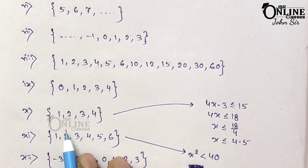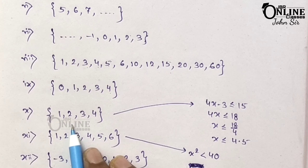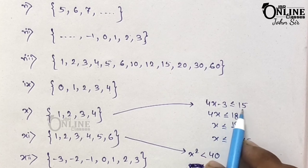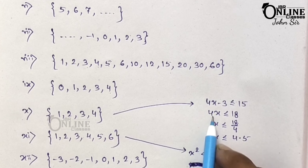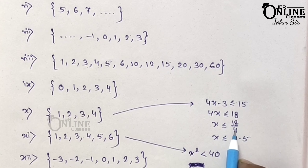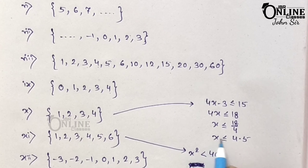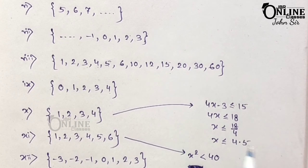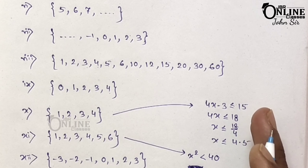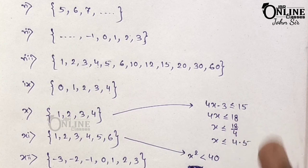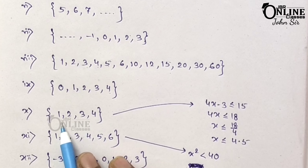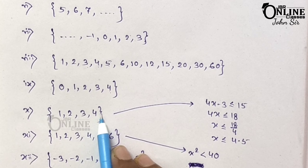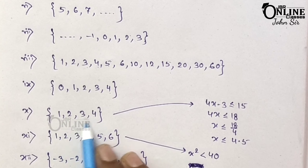Sum number 10: x such that x belongs to natural numbers where 4x minus 3 is less than or equal to 15. That means 4x is less than or equal to 18, so x is less than or equal to 18/4, which equals 4.5. Since x belongs to natural numbers, the values are 1, 2, 3, 4. So the roster form is {1, 2, 3, 4}.